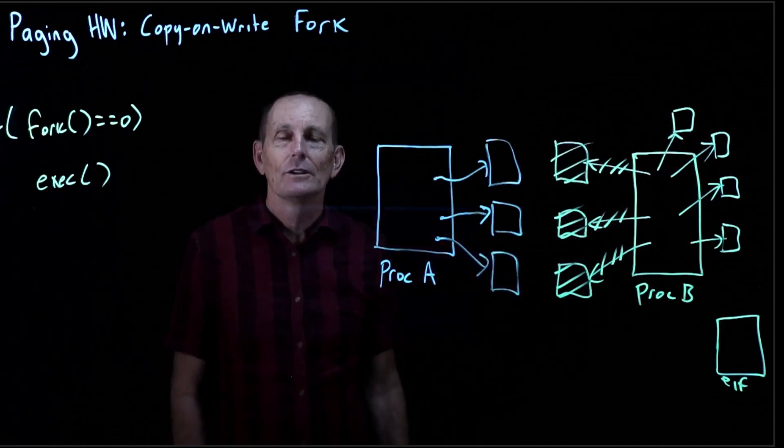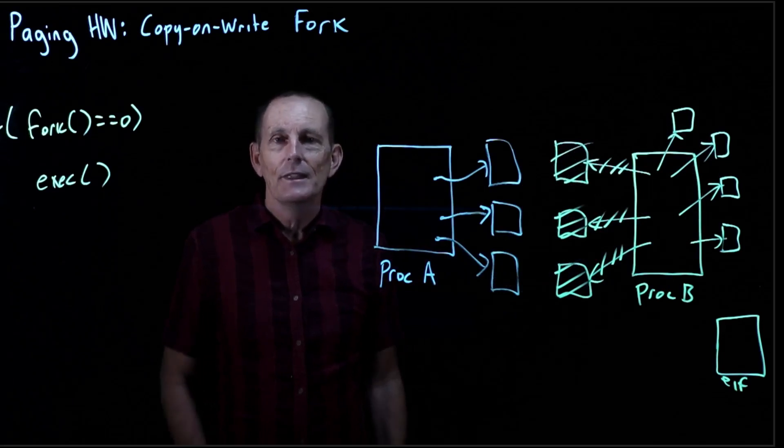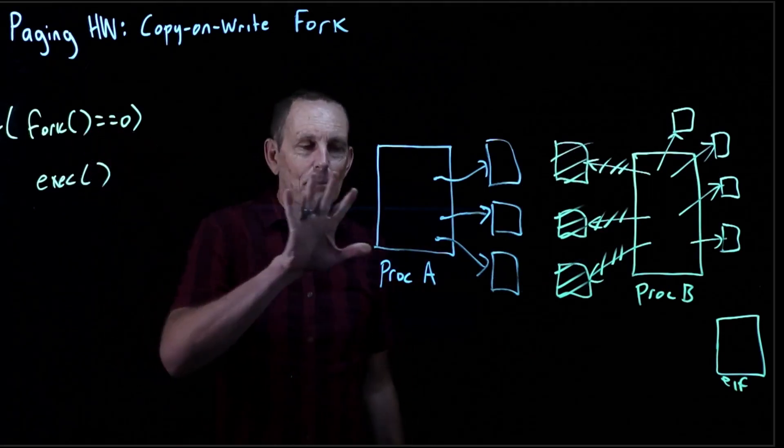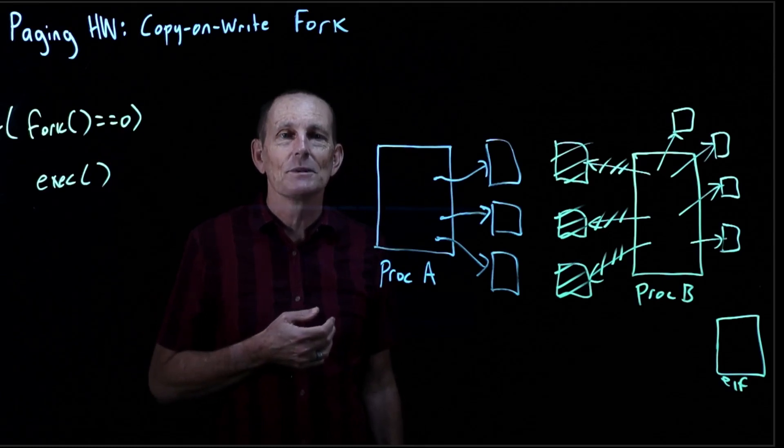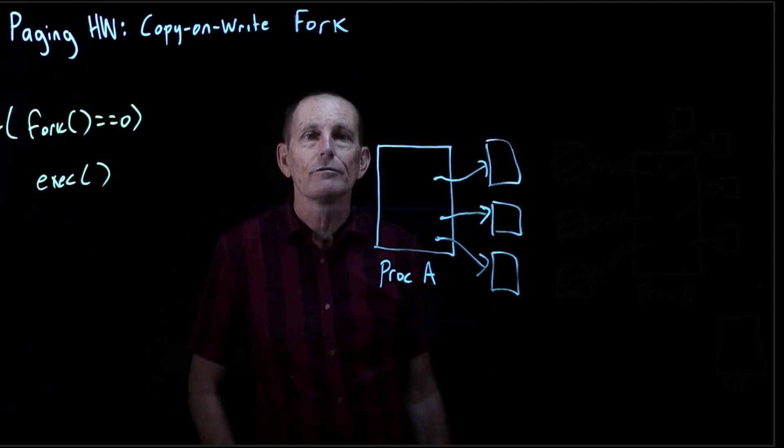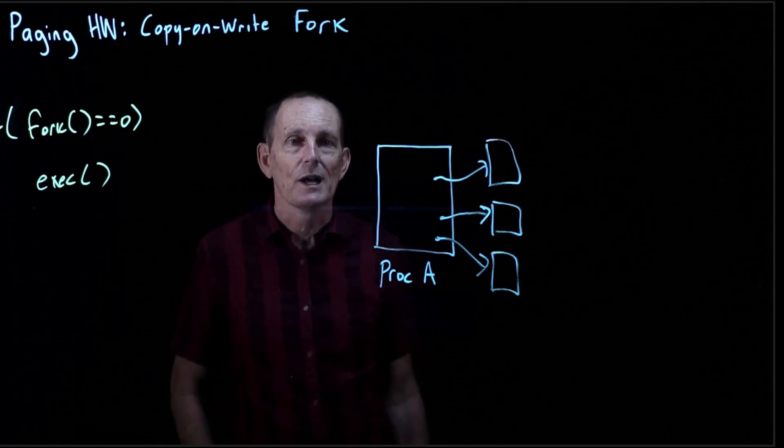So a copy-on-write fork is an optimization. The parent process and the child process can't tell the difference using this optimization, but it speeds things up. So let's show how that's going to work. The fork will still create a new process.